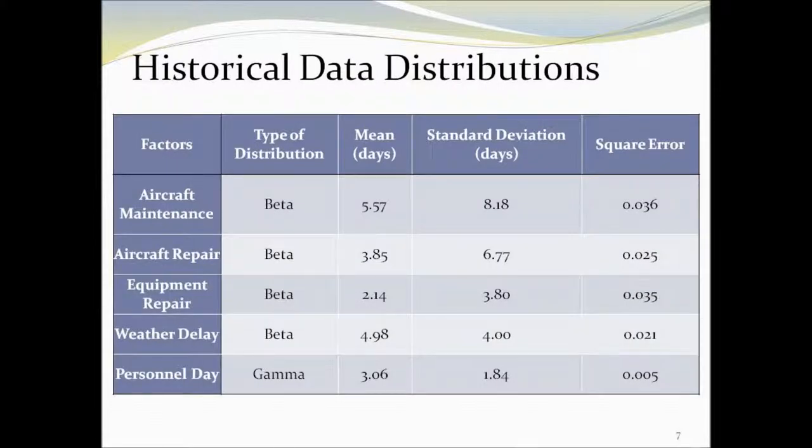Using the data from the previous table, we derived the distributions for the major factors. This data shows that there is a lot of variability in these factors, which causes increased delays.